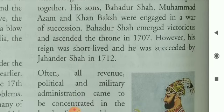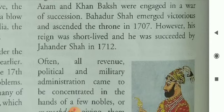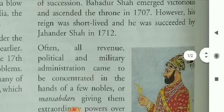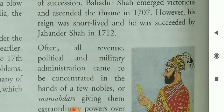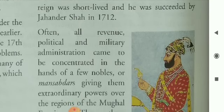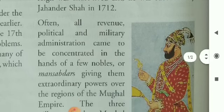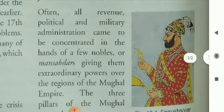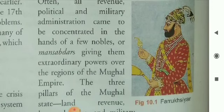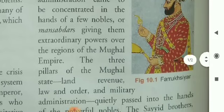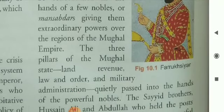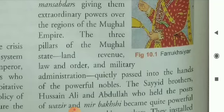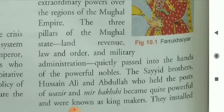His sons, Bahadur Shah, Muhammad Azam, and Khan Bakhsh, were engaged in a war of succession. Bahadur Shah emerged victorious and ascended the throne in 1707. However, his reign was short-lived and he was succeeded by Jahandar Shah in 1712. All revenue, political, and military administration came to be concentrated in the hands of a few nobles, the mansabdars, giving them extraordinary powers over the regions of the Mughal Empire.